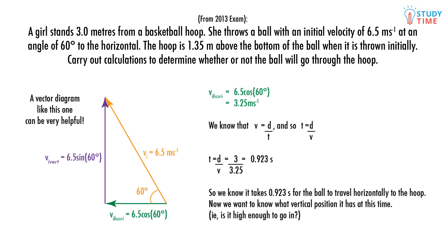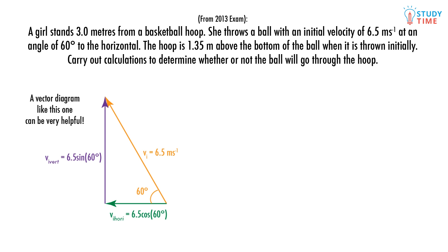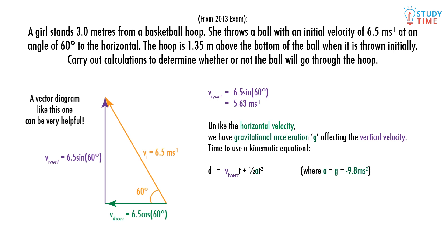Now we see if the ball is high enough to go into the hoop when it's horizontally in the right place. So we use the vertical component of the velocity. Distance equals initial velocity times time plus half acceleration times time squared equals 5.63 times 0.923 plus 0.5 times negative 9.8 times 0.923 squared. Remember the gravitational acceleration is negative since it acts downwards. And this is all equal to 1.02 meters.